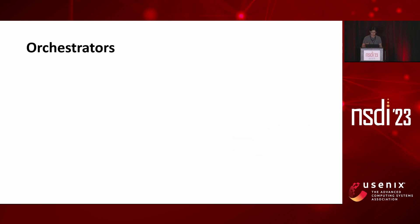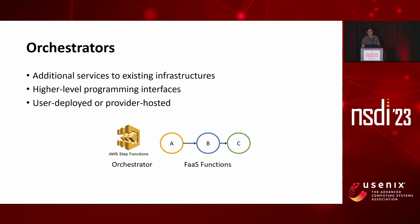To address these challenges, many have turned to the approach of adding additional services into the serverless infrastructure, and the most common approach is to add an orchestrator service. Orchestrators provide higher-level programming interfaces for defining inter-function relations, commonly as directed graphs. Users can deploy their own orchestrators in VMs and containers alongside their functions, or use provider-hosted orchestrators such as Amazon Step Functions.